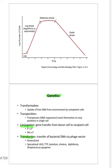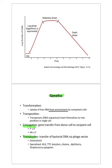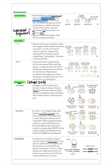Transformation means acquiring free DNA from the environment. The bacteria bind environmental DNA from the bacterial chromosome. This feature is seen in the 'SHiN' organisms: S = Streptococcus pneumoniae, H = Haemophilus influenzae, N = Neisseria. These are capsulated organisms — the same ones against which we take vaccines, especially in splenectomy patients.